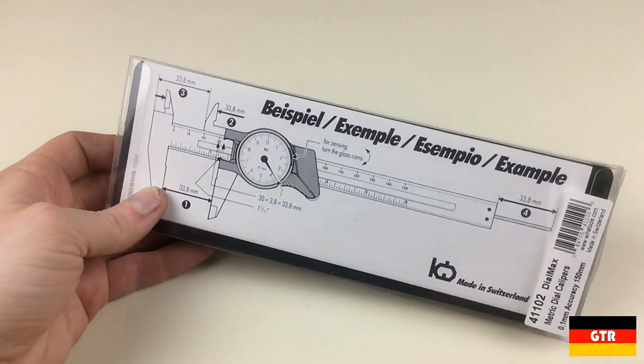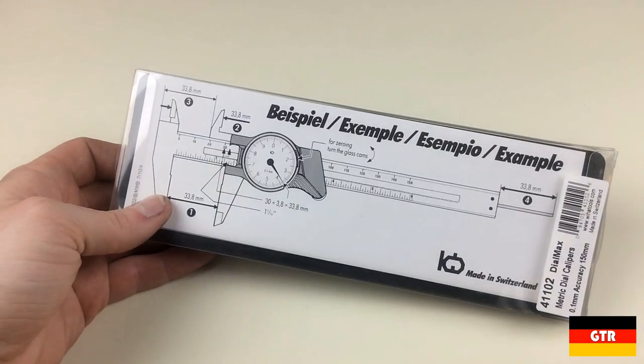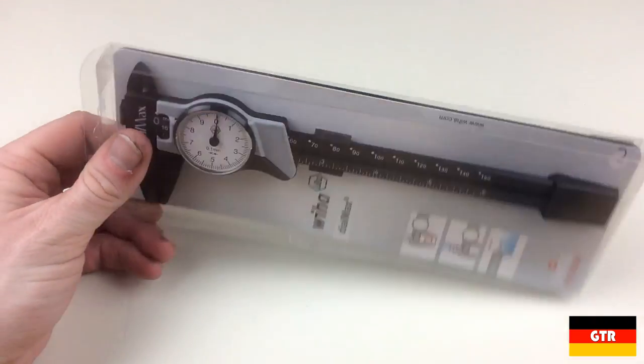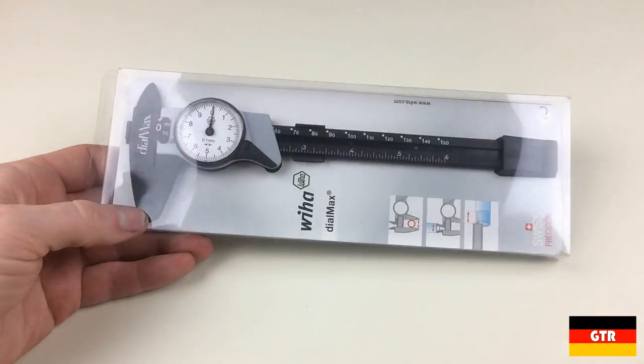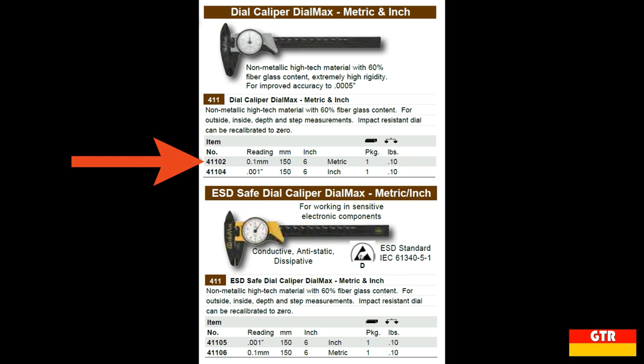Apparently they have been making this type of caliper since 1965, which is a surprise since I don't think I've ever seen a pair in person before I got these. The model that I picked up from the Dialmax line is the 41102 150mm dial calipers. For the SAE 6 inch version the part number is 41104.